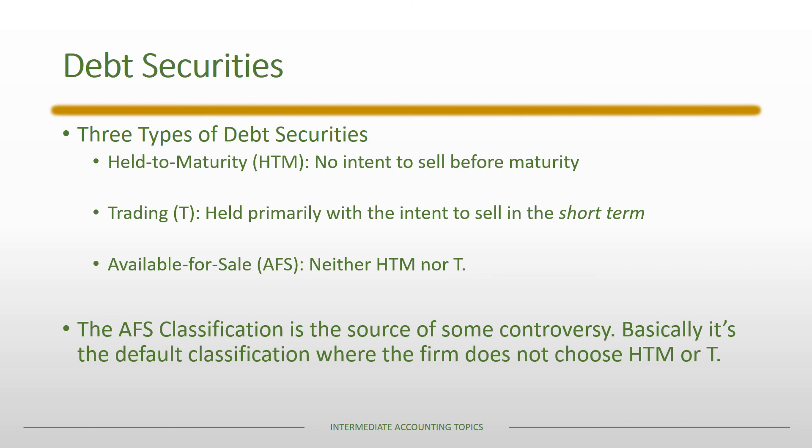The available-for-sale classification is the source of some controversy because it's a default category, and its accounting is not exactly like held-to-maturity or trading, creating potential confusion. As a comparison, equity securities no longer have this as a separate classification — under the new standards for equity securities, they don't distinguish between trading and available-for-sale. But we still make that distinction when it comes to debt securities.